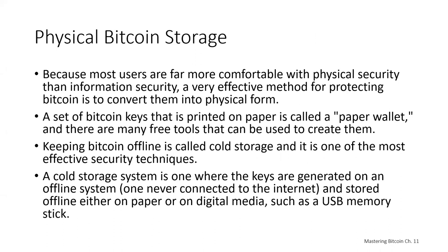Let's talk about physical Bitcoin storage. Because many users are far more comfortable with physical security than information security, an effective method for protecting Bitcoins is to convert them into physical form. Bitcoin keys are nothing more than long numbers, which means they can be stored in a physical format such as printed on paper or etched on a metal coin. Securing the keys then becomes as simple as physically securing the printed copy. A set of Bitcoin keys printed on paper is called a paper wallet, and there are many free tools to create them. Keeping Bitcoin offline is called cold storage and is one of the most effective security techniques — a cold storage system generates keys on an offline system not connected to the Internet, and stores them on paper or digital media such as a USB memory stick.